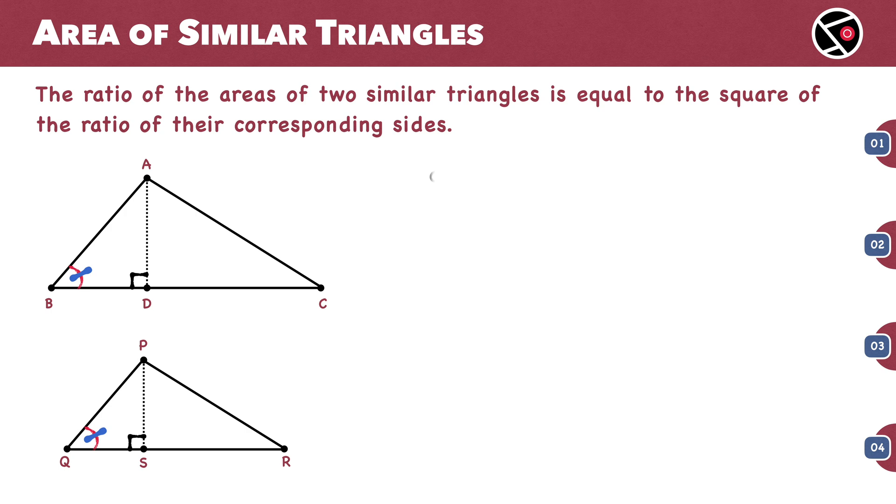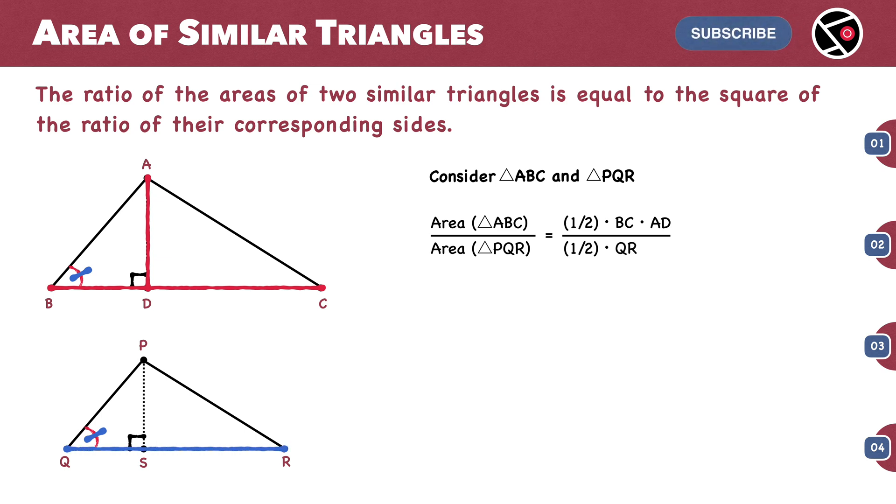Now let's look at the areas of triangles ABC and PQR. The ratio of the area of triangle ABC to the area of triangle PQR is: half times base BC times height AD, divided by half times QR times PS. Canceling the common factors, we have BC by QR times AD by PS.